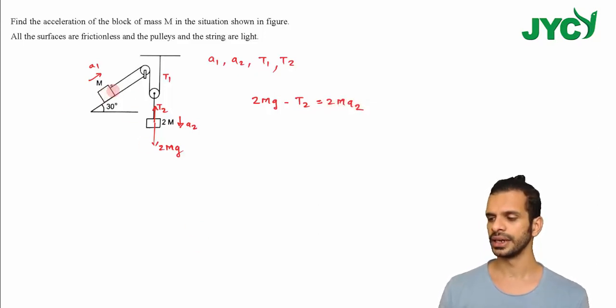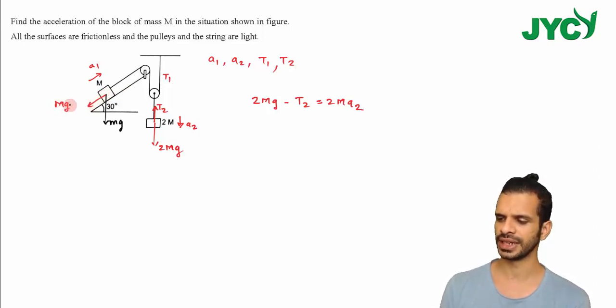For this block's equation, MG is downward with two components. One is MG sin 30 which is MG by 2, and the other is MG cos 30 which is MG root 3 by 2. There's also force N here.